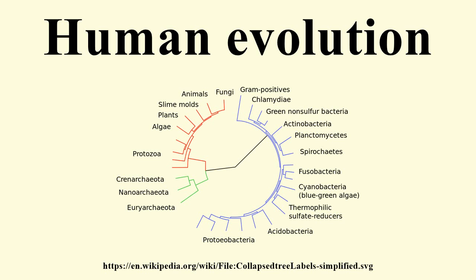In 2013, fossil skeletons of Homo naledi, an extinct species of hominin assigned to the genus Homo, were found in the Rising Star Cave system, a site in South Africa's Cradle of Humankind region in Gauteng province near Johannesburg. As of September 2015, fossils of at least 15 individuals, amounting to 1,550 specimens, have been excavated from the cave. The species is characterized by a body mass and stature similar to small-bodied human populations, a smaller endocranial volume similar to Australopithecus, and a cranial morphology similar to early Homo species. The skeletal anatomy combines primitive features known from Australopithecines with features known from early hominins. The individuals show signs of having been deliberately disposed of within the cave near the time of death. The fossils have not yet been dated.